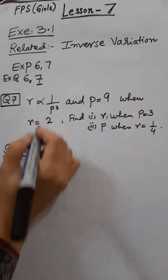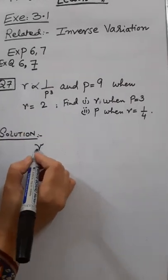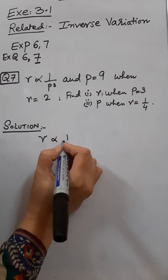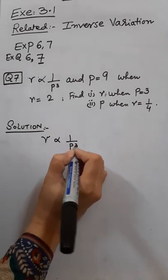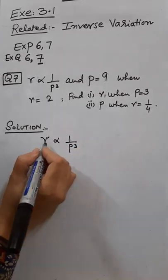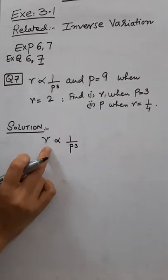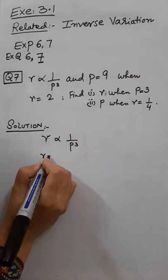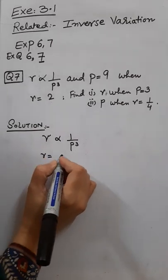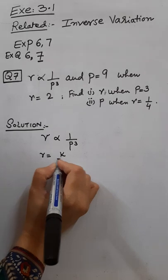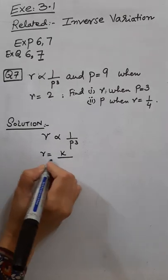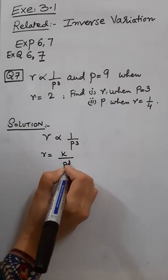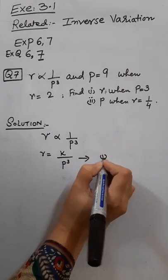First of all, the relation given is inversely with 1 by P³. Write down this condition first of all in the solution, and while writing in equation form it will be R equals K by P³. This is the first equation.